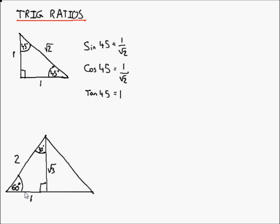We can verify with Pythagoras: 1 squared plus root 3 squared gives 1 plus 3 equals 4, which equals 2 squared — simple enough. From this triangle we can find sine 60, cosine 60, tan 60, and also sine 30, cosine 30, and tan 30.